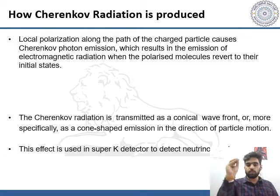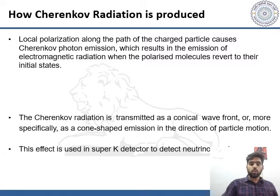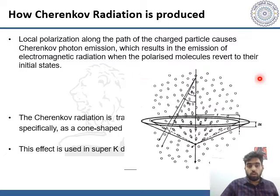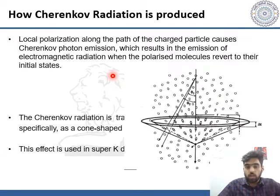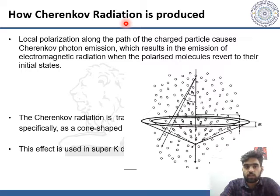The Cherenkov radiation is transmitted as a conical wavefront, or more specifically as a cone-shaped emission in the direction of particle motion. When seen in 3D, it can be interpreted as a cone moving and making a ring. This effect is used in the Super Kamiokande detector to detect neutrinos and muons. As you can see, when the Cherenkov radiation moves through the medium it produces a ring-like structure.